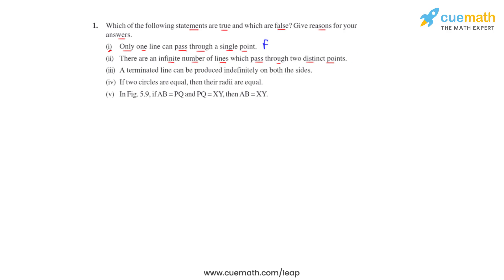Statement three says that a terminated line can be produced indefinitely on both sides. In the figure, P and Q are the two endpoints, so line segment PQ is a terminated line segment. But we can extend or produce this line segment from both ends, as the dotted lines show. Also, according to Postulate 2, a terminated line can be produced indefinitely. So statement three is true.